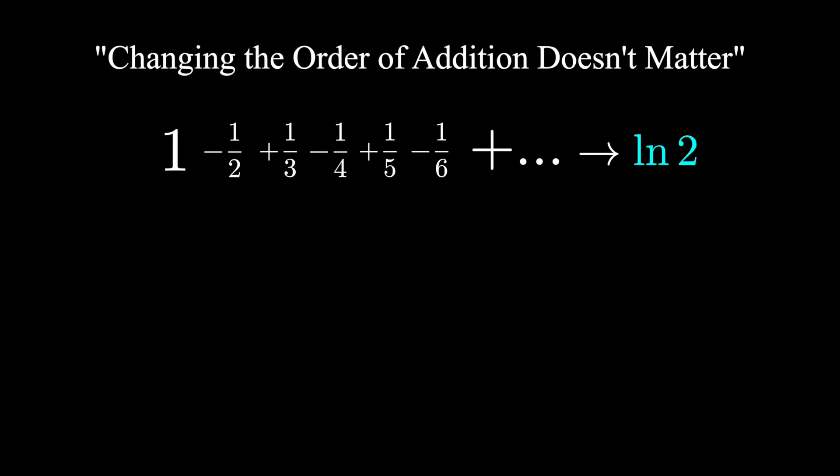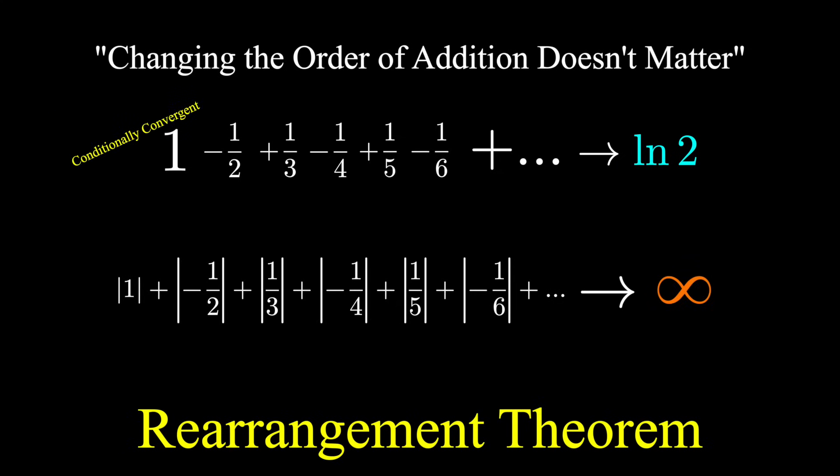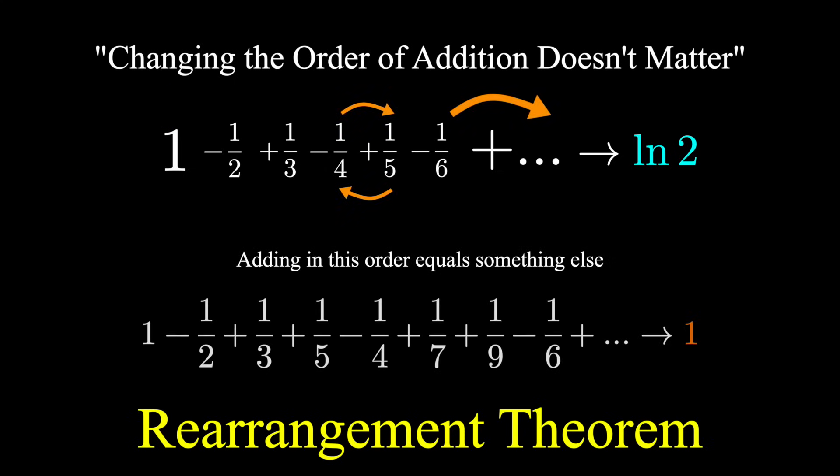But we actually have the Riemann rearrangement theorem, which says that if a sum is conditionally convergent, you can rearrange the terms to make it converge to essentially whatever you want. Since our example only converges if each term is not in absolute value, we call this conditionally convergent. And if I start rearranging the order of these terms, we can make it sum into whatever we want. We can make it converge to any number, or even diverge.